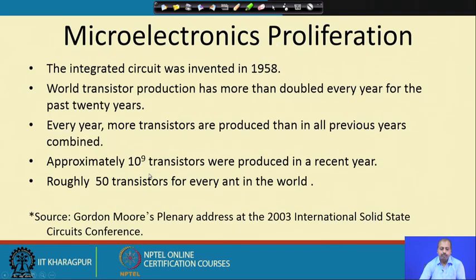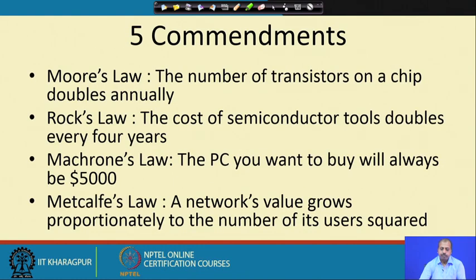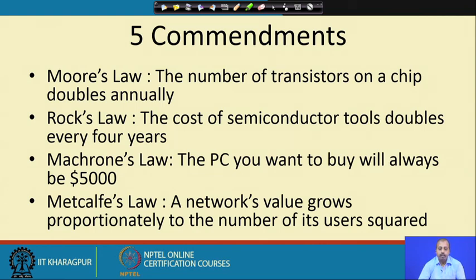There are a few laws which predicted the growth of this electronic industry. The first one is Moore's Law, which says that the number of transistors on a chip doubles annually. This is a prediction and it has more or less been followed.